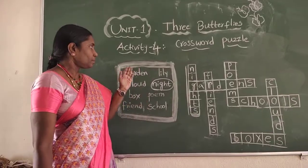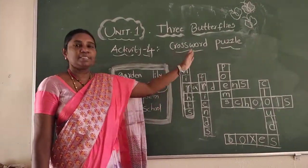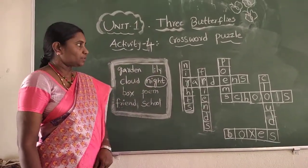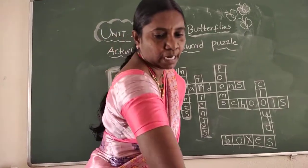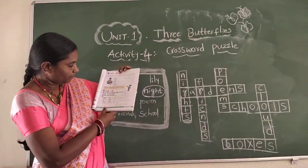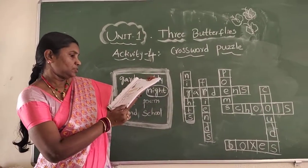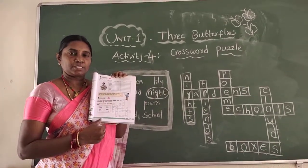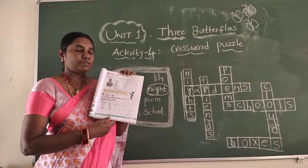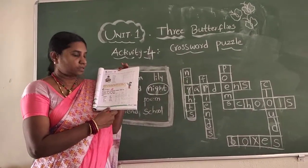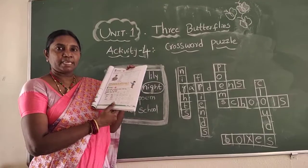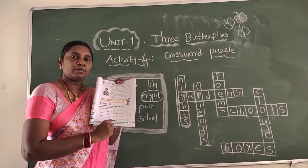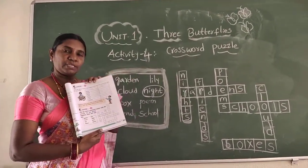So my dear children, today we have completed crossword puzzle. So you also need to check this puzzle. I will show you. This is the activity 4, page number 5. If you have done many mistakes, you can rewrite it again. So when you do it, you can do it with pencil.